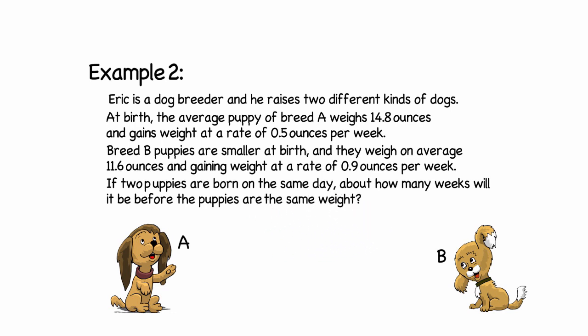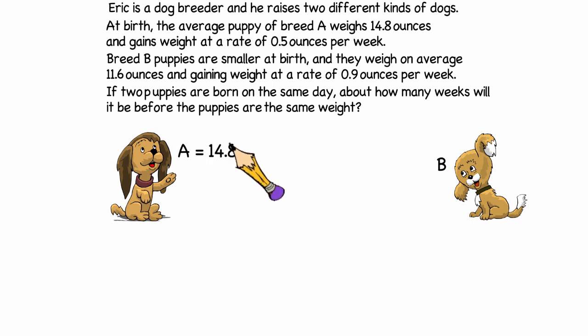So breed A starts off at 14.8 ounces and gains about 0.5 ounces per week. So we're going to use the variable W to represent weeks. And breed B starts off at a weight of 11.6 ounces. And it gains 0.9 ounces per week. So again, we'll use the letter W. We want to know when breed A is equal to breed B. So our equation would be 14.8 plus 0.5W is equal to 11.6 plus 0.9W.